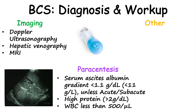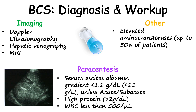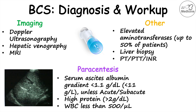Blood work is also part of the workup. Because of liver cell damage, elevated aminotransferase levels — elevated AST and ALT — are found in up to 50% of patients. Liver biopsy can be performed for staging, especially in those requiring a liver transplant due to end-stage liver disease. PT, PTT, and INR can also be measured, as many cases are due to hypercoagulable conditions. Additional diagnostic methods can be used to identify the underlying cause, including looking for cancers or specific hypercoagulable conditions.